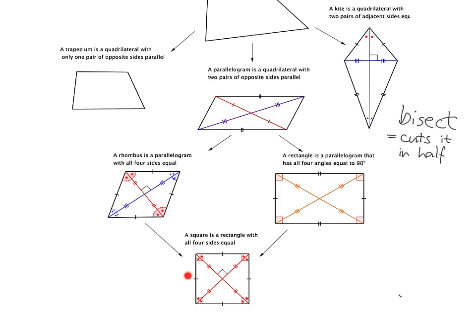Parallelogram — we've got all these different kinds of parallelograms here. The very first one is your most simple form of parallelogram, where you've just got both pairs of opposite sides parallel. The diagonals here actually bisect each other. In other words, this one cuts this one in half, so this bit and this bit are equal, and this one cuts this one in half, so this and this are equal. Both diagonals bisect each other.